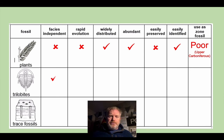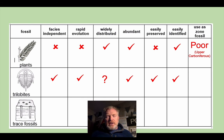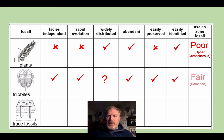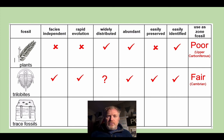The trilobites do tick a lot of the boxes — they're free swimmers, they did evolve rapidly, we think widely distributed, certainly abundant, preserved, and identified — a very diverse group. However, the period of time where they are most abundant is really only the Cambrian, maybe going into the Ordovician. So their use as zone fossils in the Cambrian is excellent, but everywhere else we don't really use them.